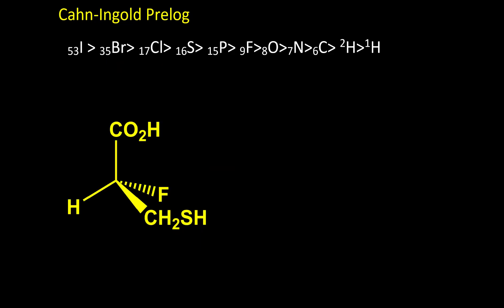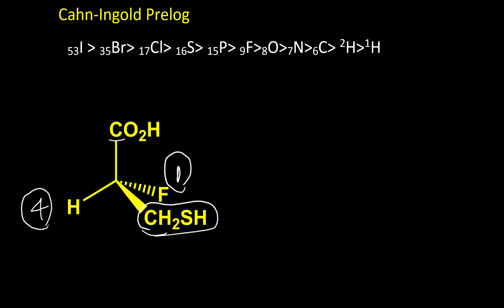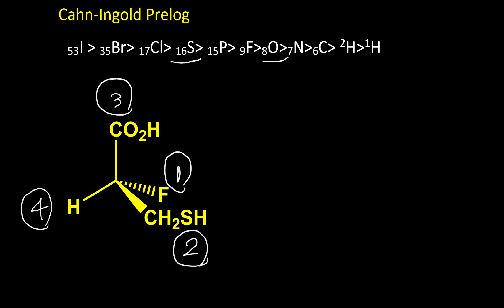Here is the next example. Fluorine is number one, and we have carbon and carbon. Hydrogen is number four. Between these two carbons — this group after carbon has sulfur, which has higher priority. So this is number two, and this carboxylic acid is number three. Please keep in mind that when we have different atoms, we don't care if we have one oxygen or two — we only look at the type of atom. This carbon has oxygen and this carbon has sulfur, so sulfur has higher priority. But in this arrangement, we are not able to find the configuration because number four is not in the back and also not in the front — it is in the plane of the molecule. So we need to adjust the molecule.